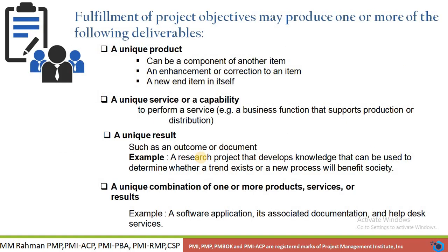When we say that the project objectives are fulfilled, that means the deliverables are produced and we have met the objectives of the project. This means that the unique product is created. A unique product can be a component of another item.